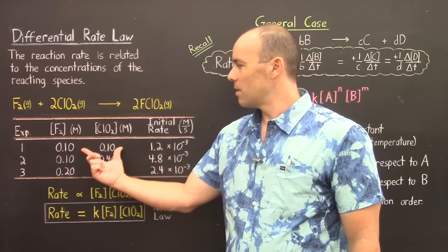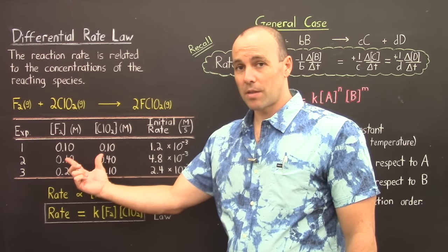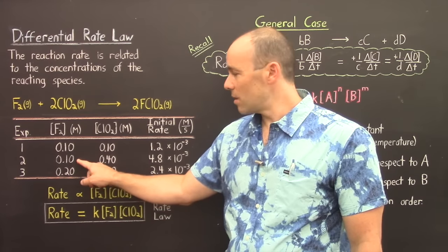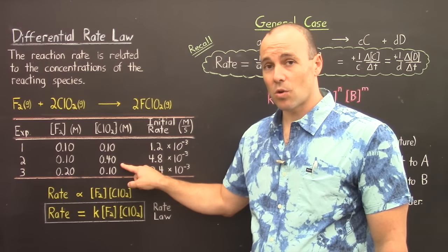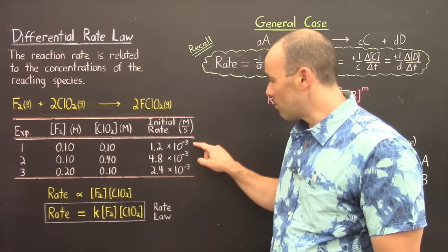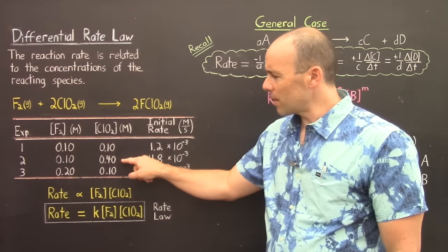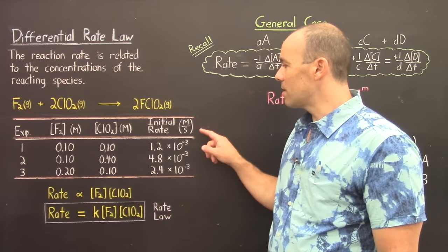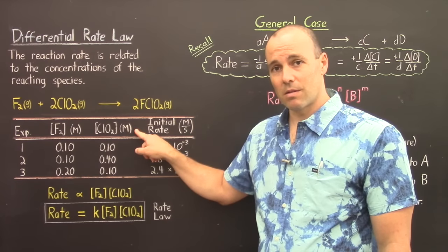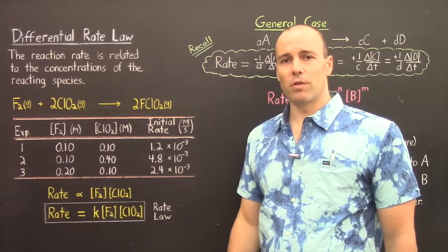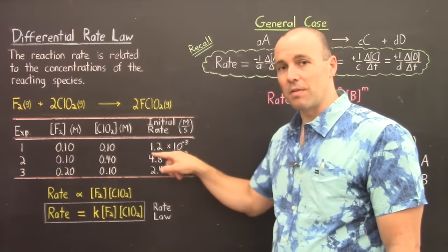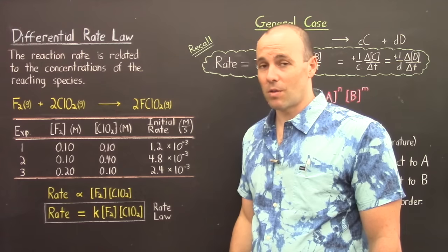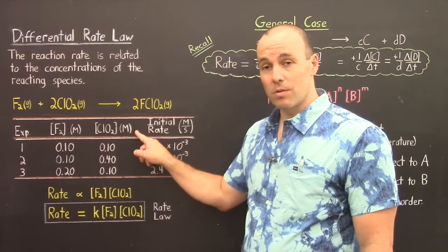In the first experiment, both reactant concentrations are 0.1 molarity and the initial rate was determined. In the second experiment, the fluorine concentration is kept the same, but the ClO2 concentration is quadrupled — and the rate is also quadrupled. Quadrupling the concentration means quadrupling the rate: that's a linear relationship. So the rate is directly proportional to the concentration of ClO2.